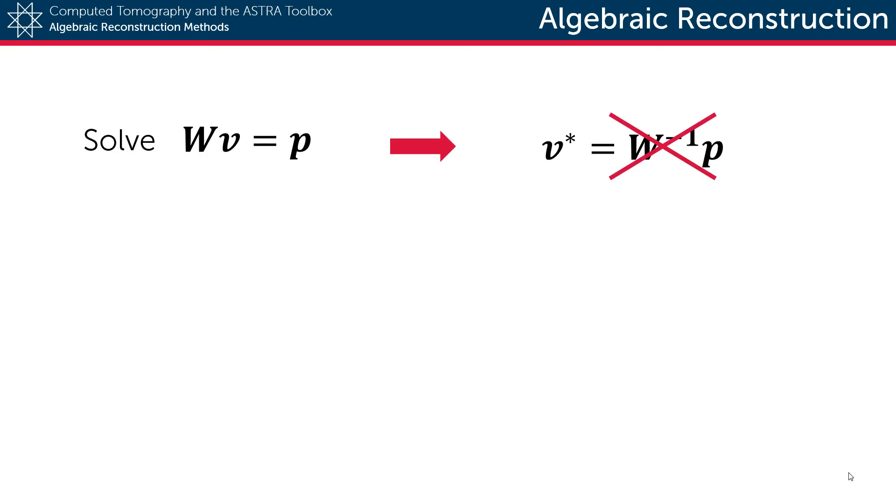and two because it is too large to compute anyway. Instead, we are looking at an optimization problem where we try to find the solution vector such that the difference between the measured projection data and a simulated projection of the solution is minimal in some norm. This difference is also called the residual projection or the projection distance.